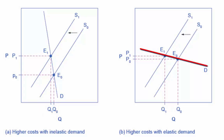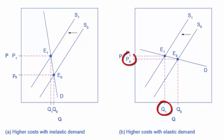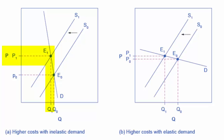In the graph on the right, demand is elastic, so the shift in supply results primarily in a lower equilibrium quantity and a small change in price. Consumers suffer in either case, but in the graph on the left they suffer from paying a higher price for the same quantity, while in the graph on the right they suffer from buying a lower quantity and presumably needing to shift their consumption elsewhere.